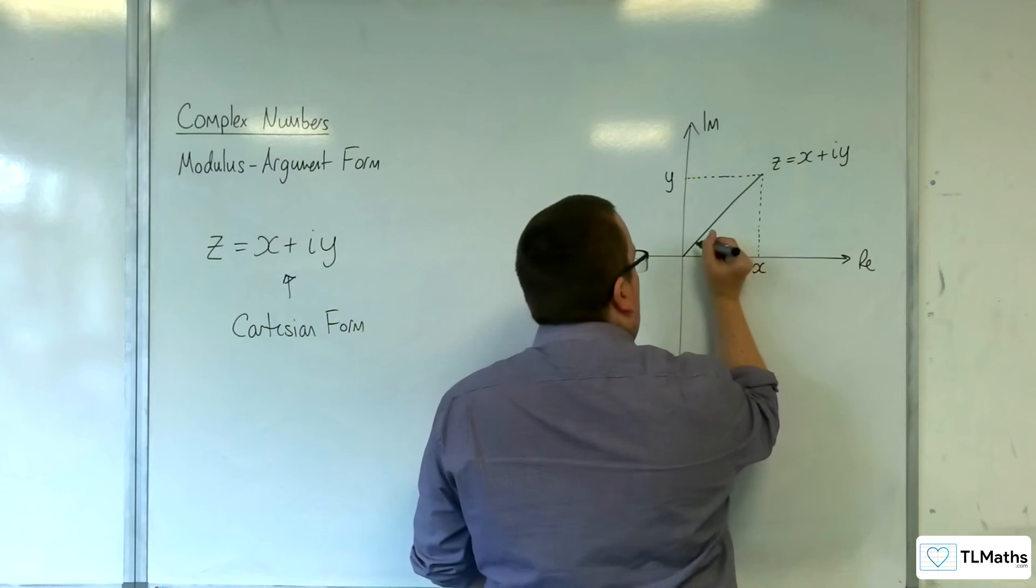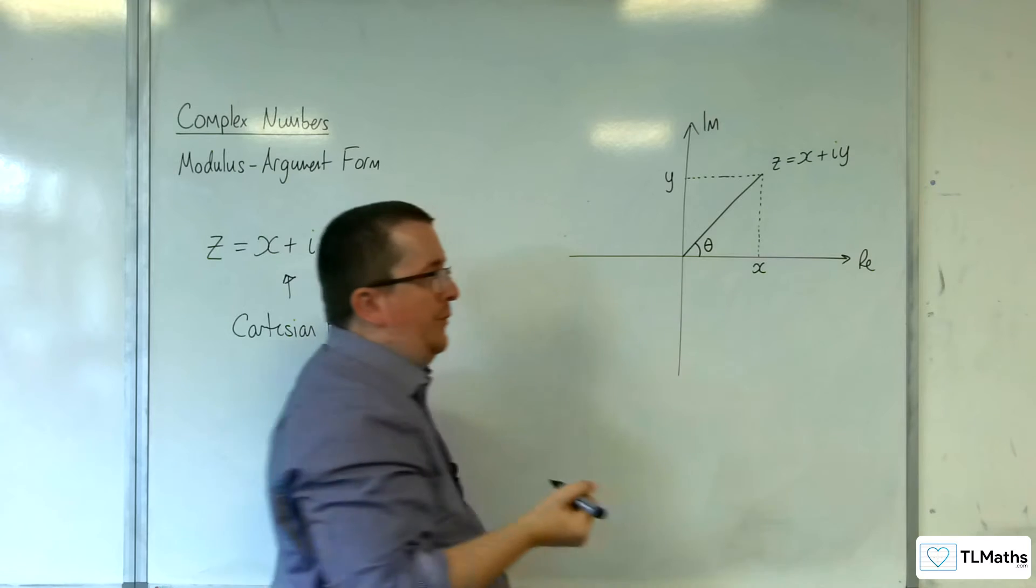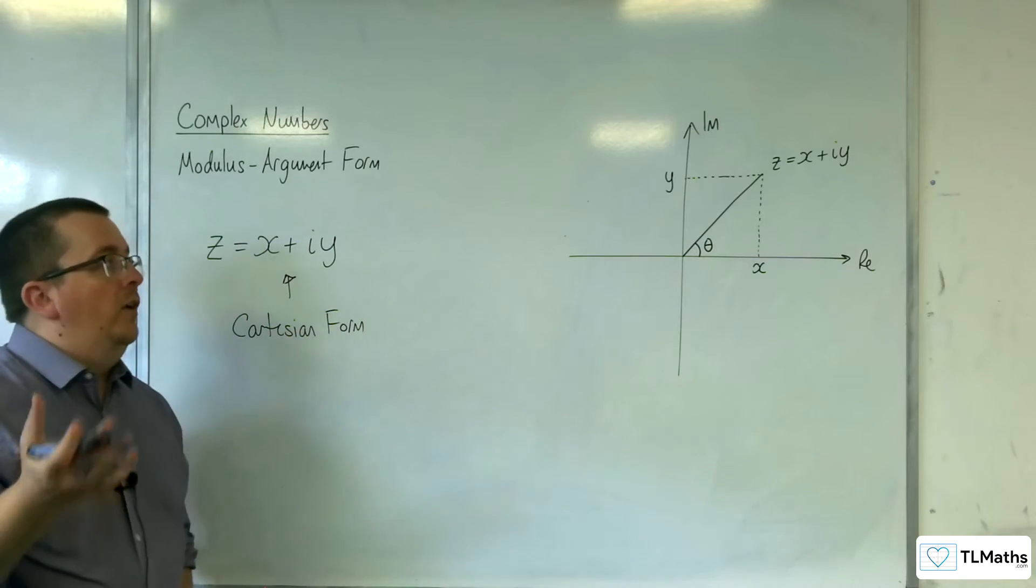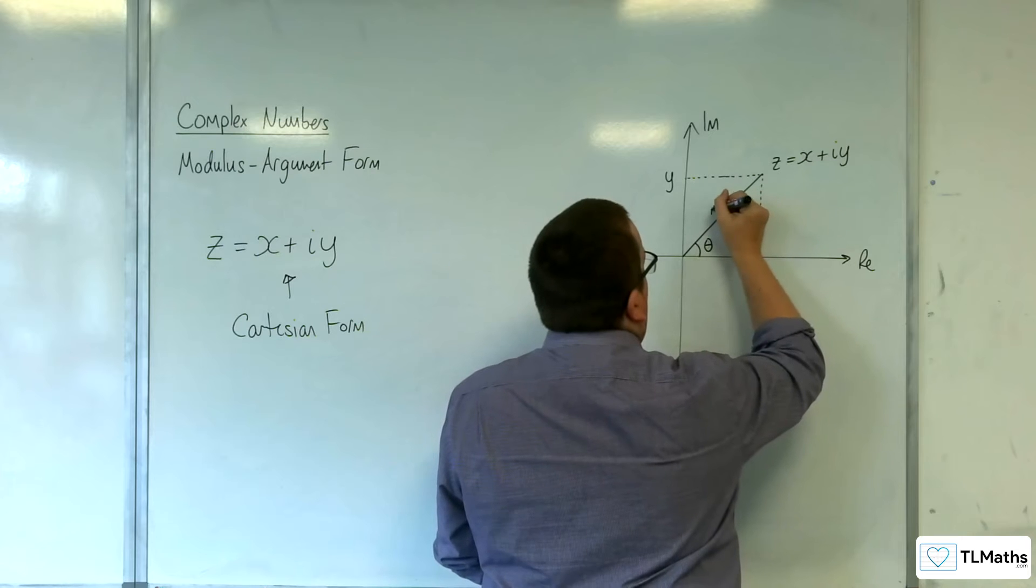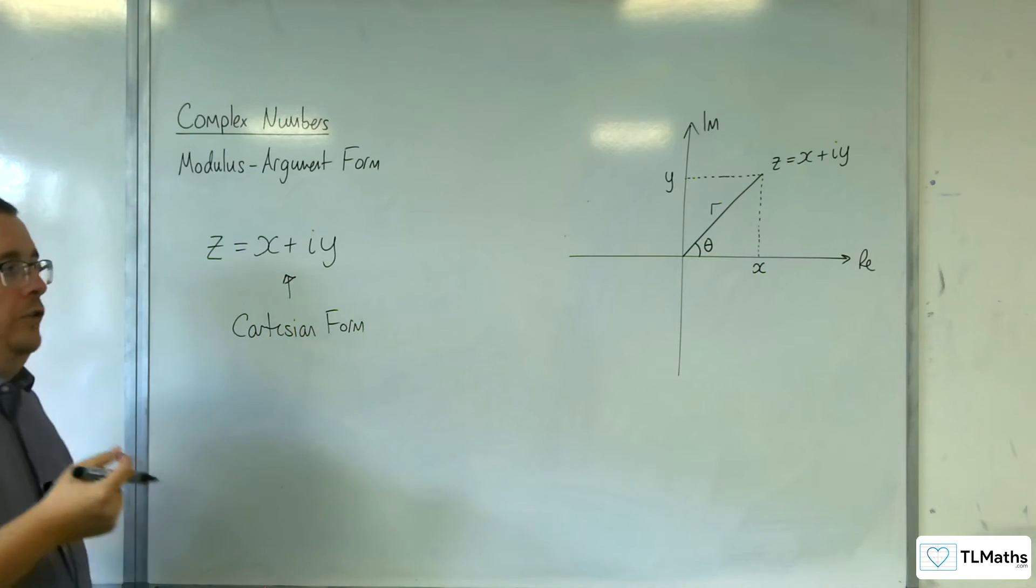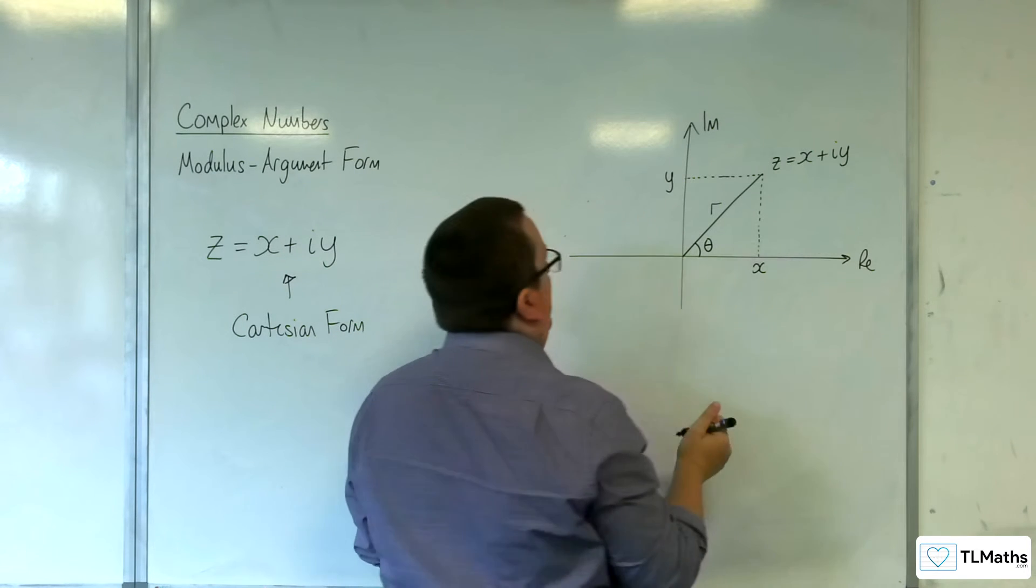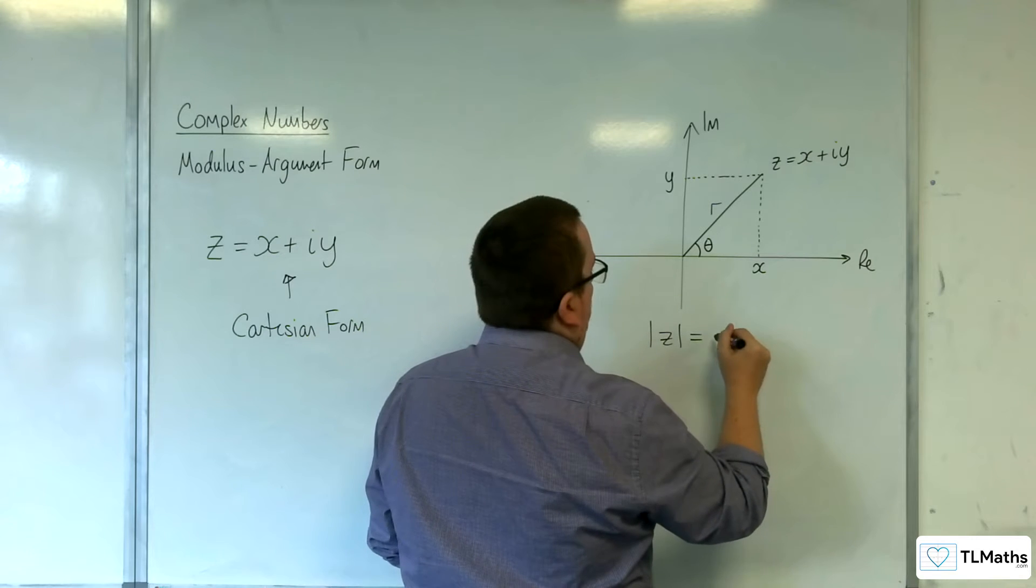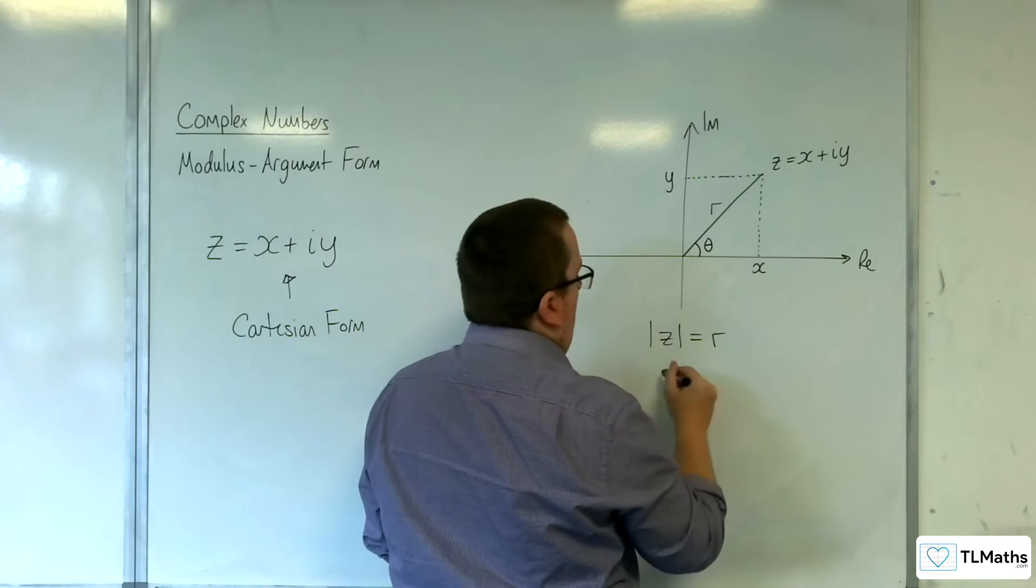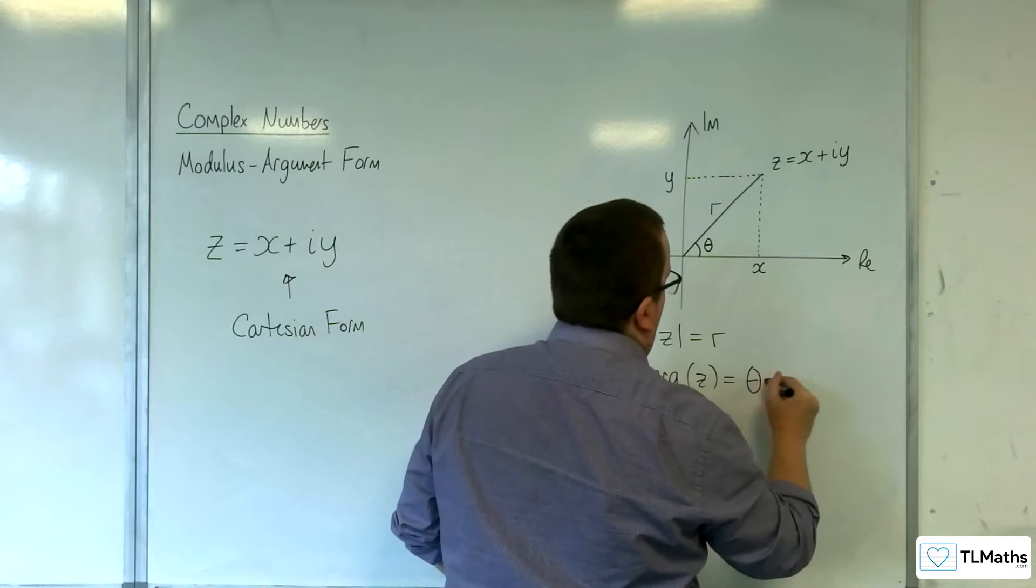So this is my angle, which I'll write in as theta, and I'll also write in its length as R. So effectively what I'm saying is that the modulus of Z is equal to R, and the argument of Z is equal to theta.